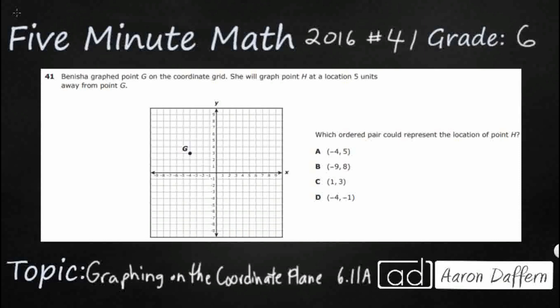So Benicia graphed point G on the coordinate grid, then she will graph point H at a location 5 units away. That's all we know, 5 units away. And which ordered pair could represent H?